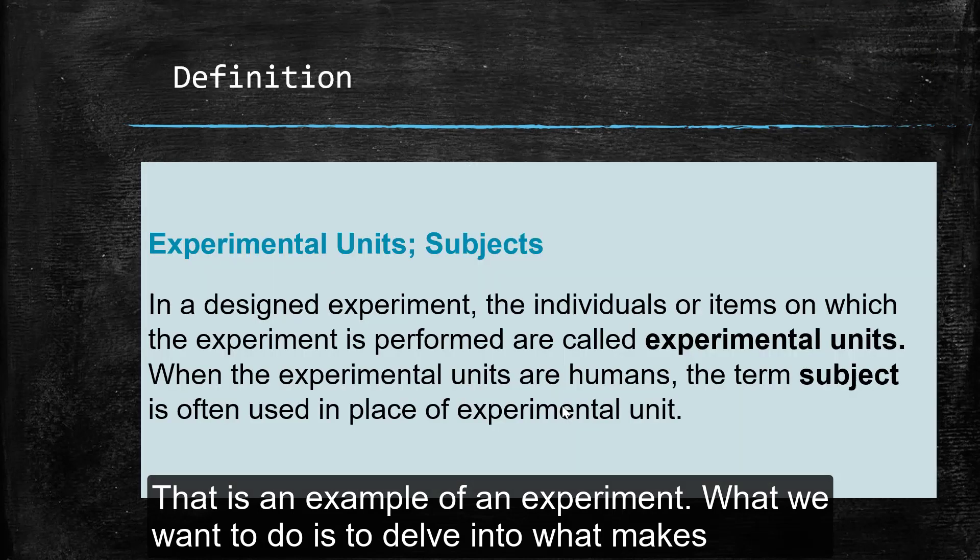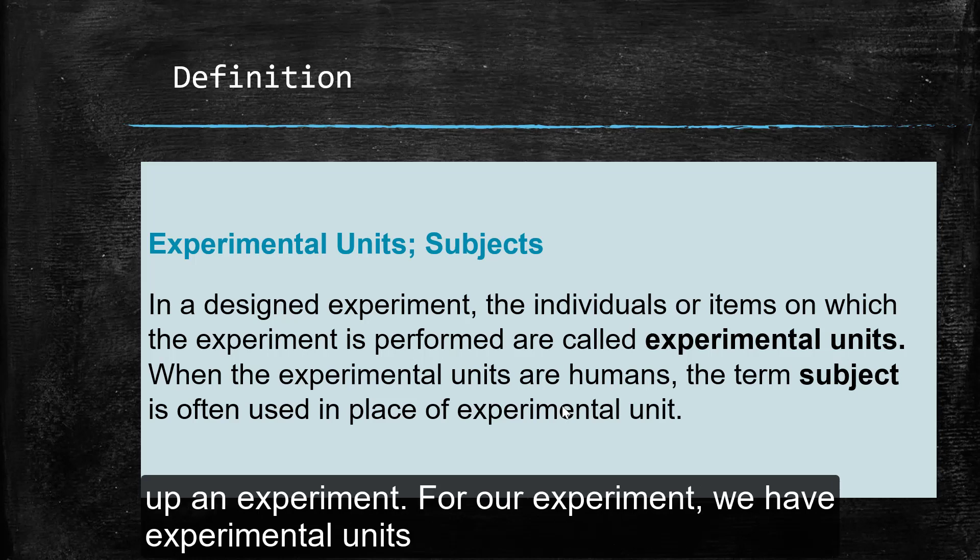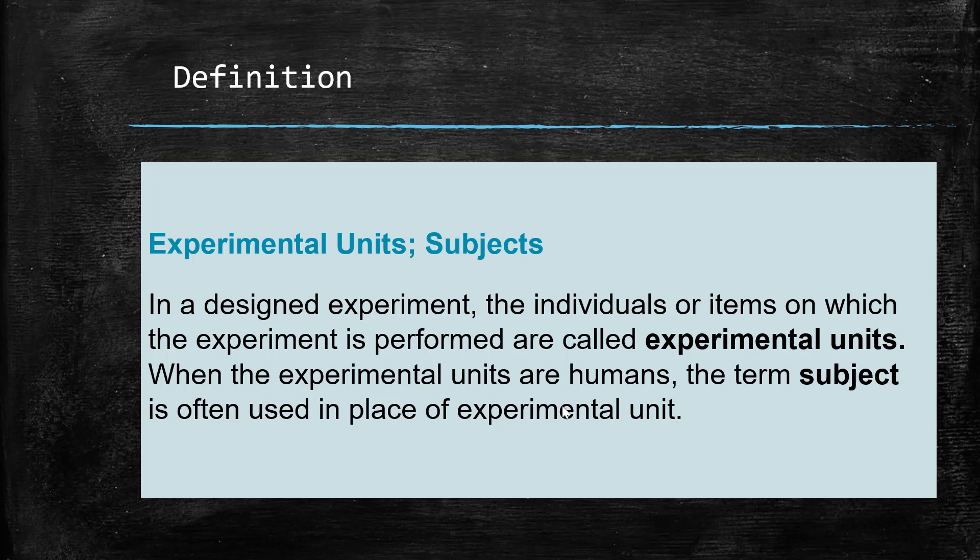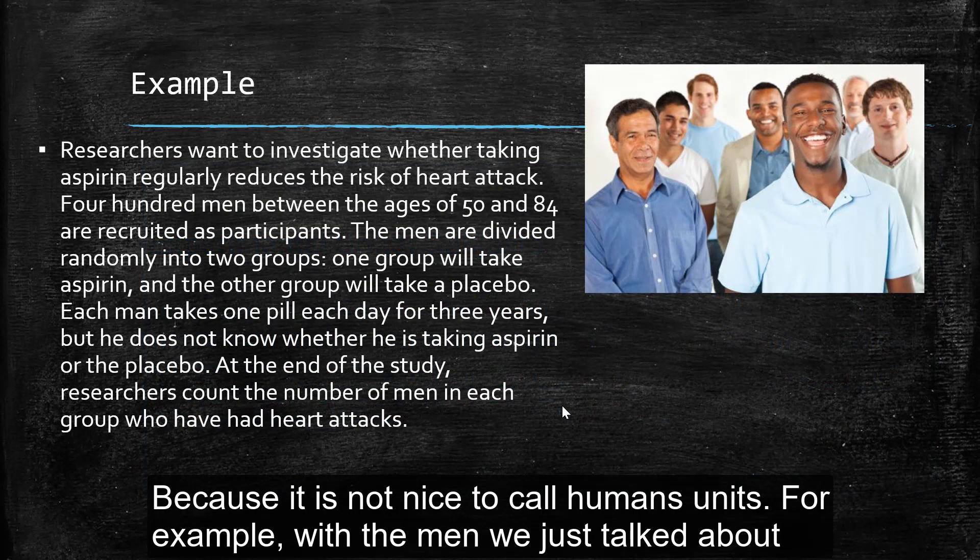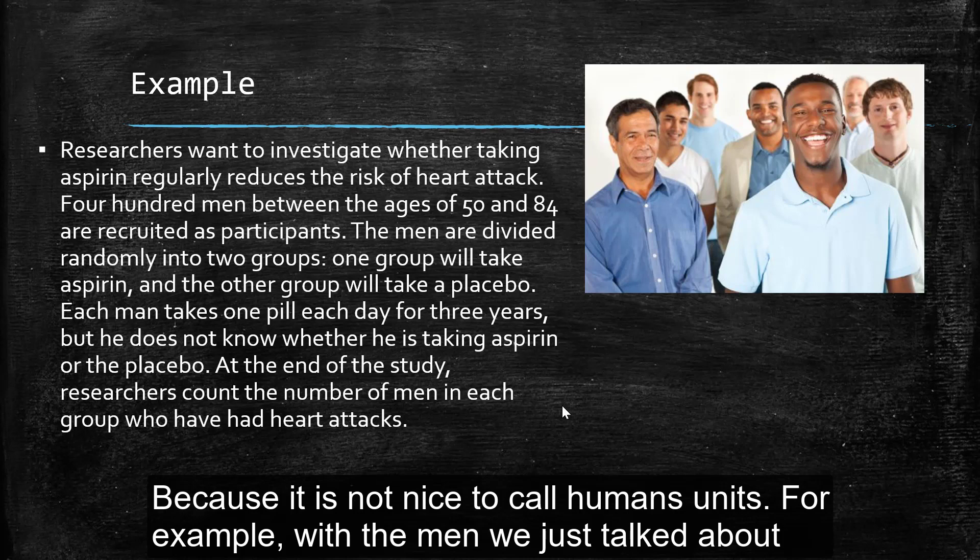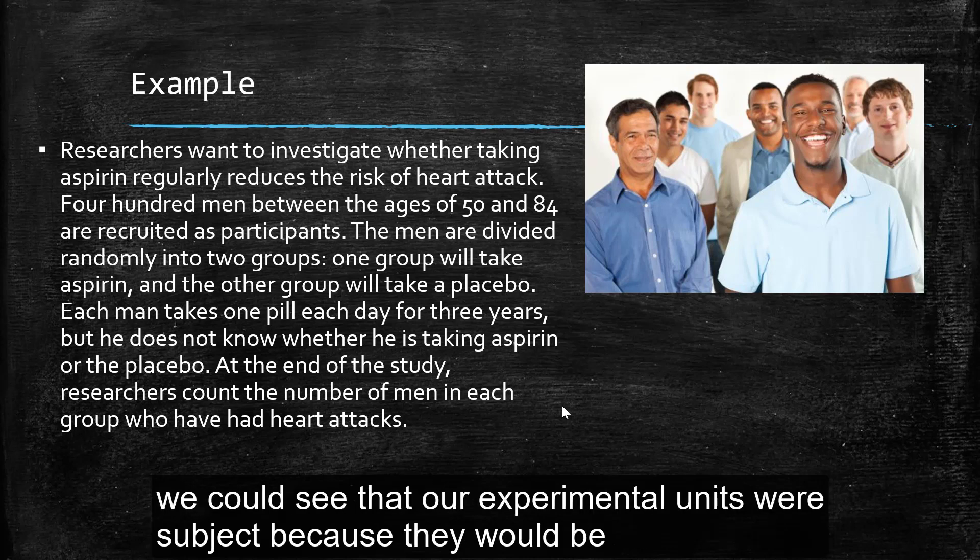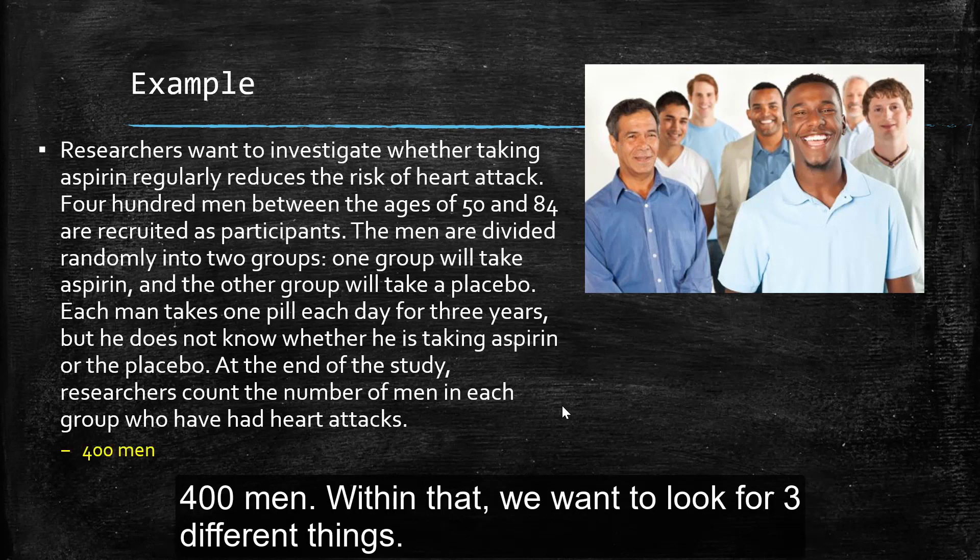What we want to do is delve into a little bit more about what experiments mean. So for our experiment, we have experimental units. That's what we're performing the experiment on. And if it's humans, we call them subjects because it's not nice to call a human a unit. For example, with our men that we just talked about, we could see that our experimental units were subjects because they would be the 400 men.